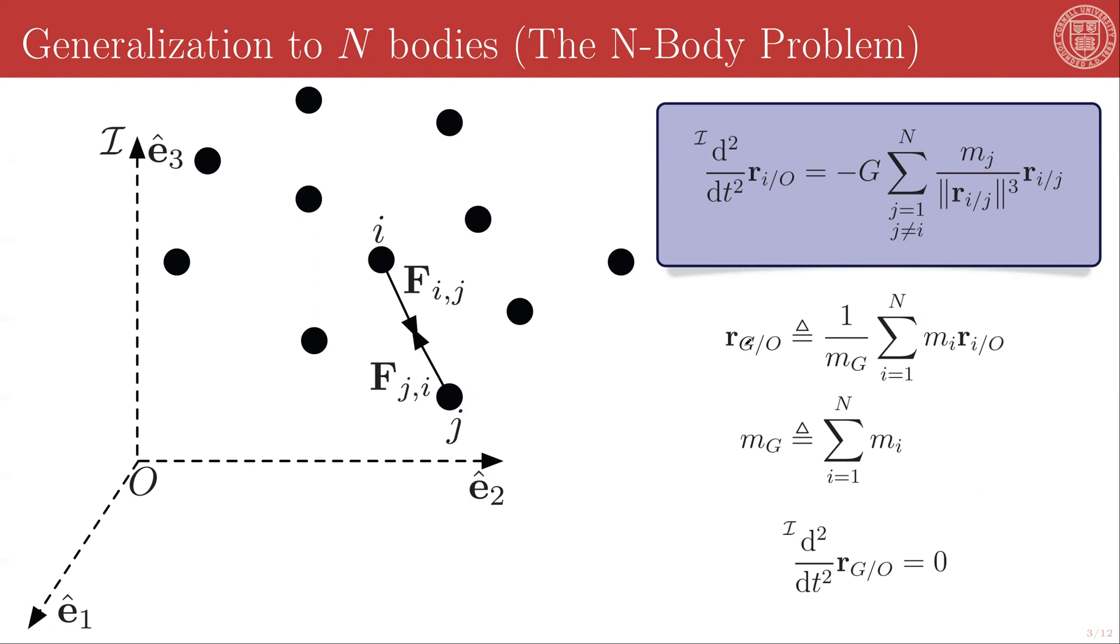We can similarly define the center of mass of this collection, which we will call G, as the mass-weighted ratio of the collection, where mg is the total sum of the masses in the collection. Just as with the two-body system, the center of mass of the whole collection does not accelerate. The center of mass of the system, also known as the barycenter, is an inertially non-accelerating point.